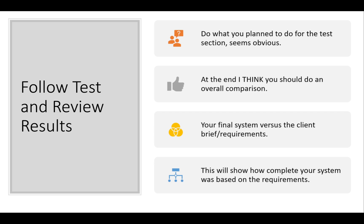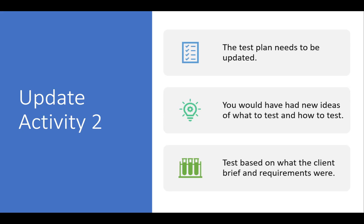Follow the test and review the results — do what you planned to do for the test section. At the end, you should do an overall comparison: that's the analysis. You compare what you were asked to do versus what you actually got done — your final system versus the client brief or requirements. This shows how complete your system is based on the requirements. Go back and update Activity 2 if you need to; you can 100% change stuff because it's your exam paper.